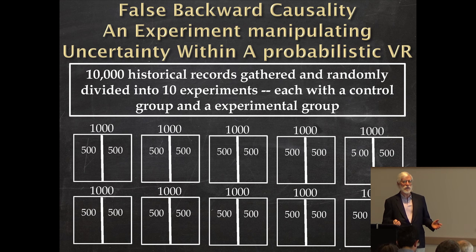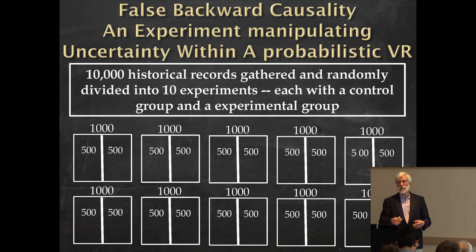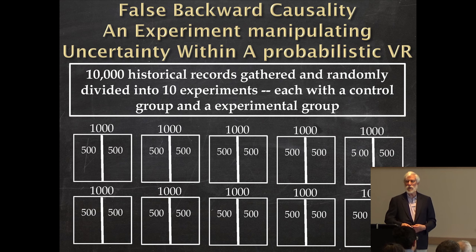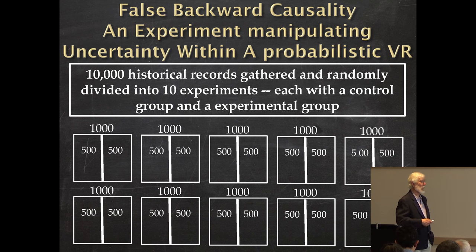This is an easy experiment to do on your own if you get a random number generator from Paralabs — though Paralabs no longer exists; if you Google Paralabs you'll find who they became. They sell random number generators and you can do this experiment at home. So even though it was patient records — which is hard to do at home — you can actually replicate this experiment yourself.